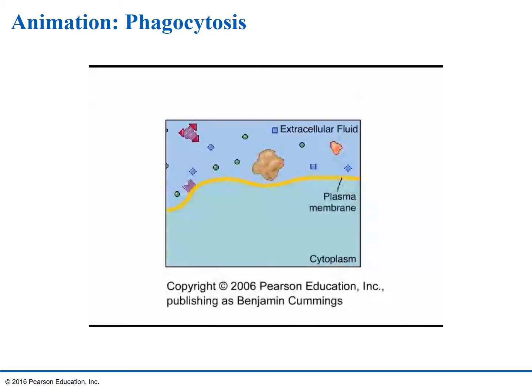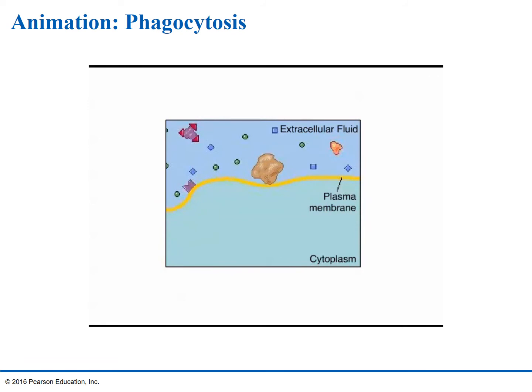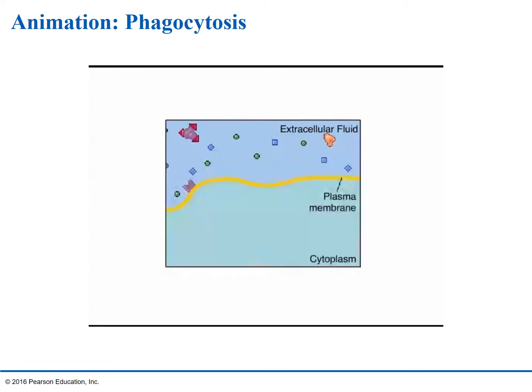In endocytosis, membranes invaginate, or pinch in, to form a vesicle, moving the enclosed materials inside the cell. This process can take different forms, each involving its own specific cell machinery. In phagocytosis, or cell eating, the cell engulfs debris, bacteria, or other sizable objects.